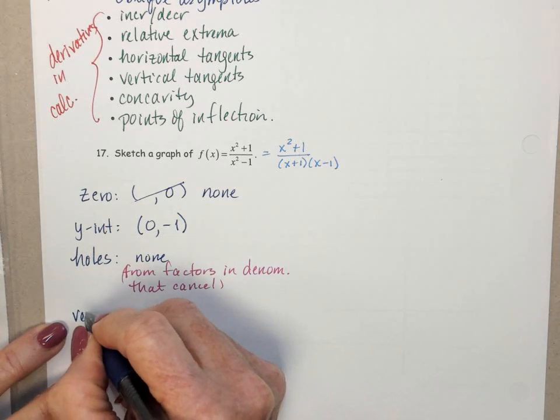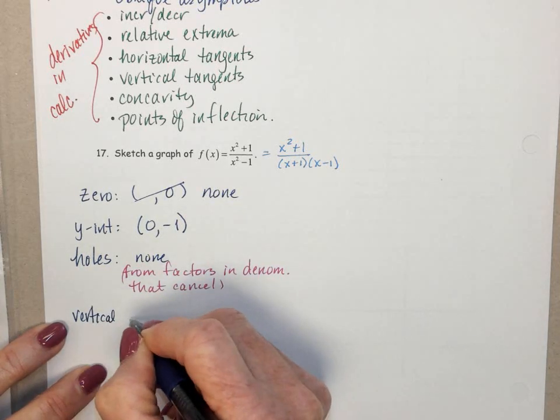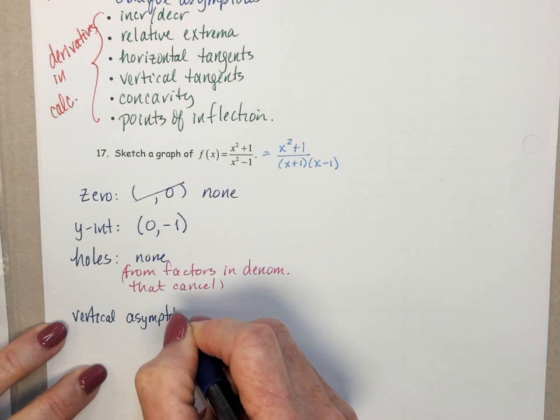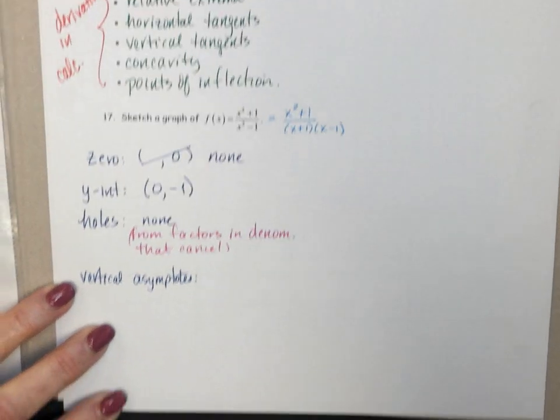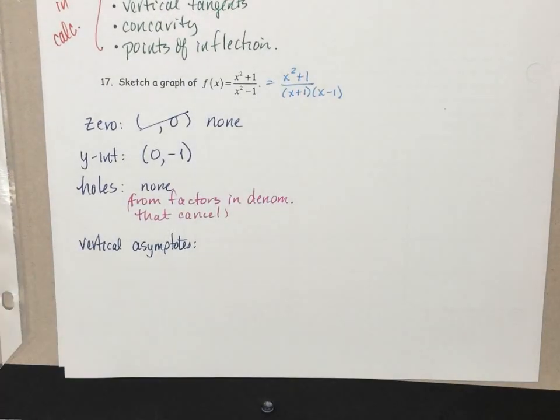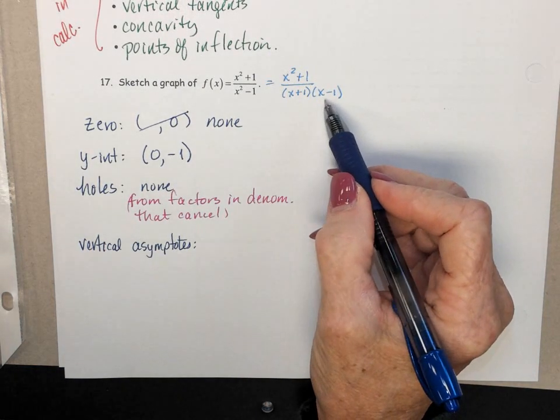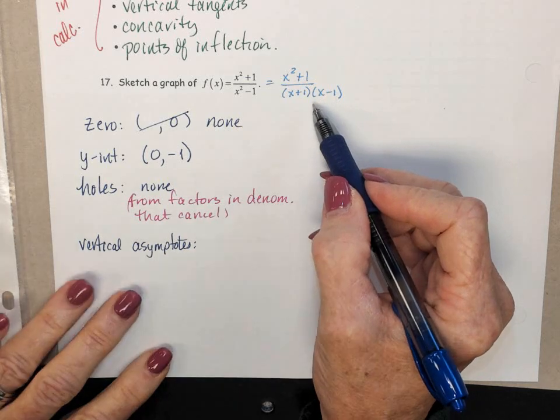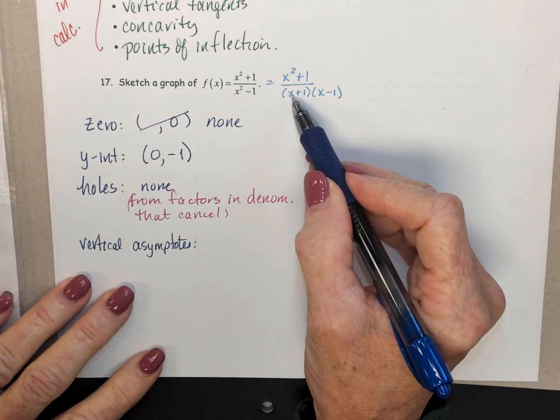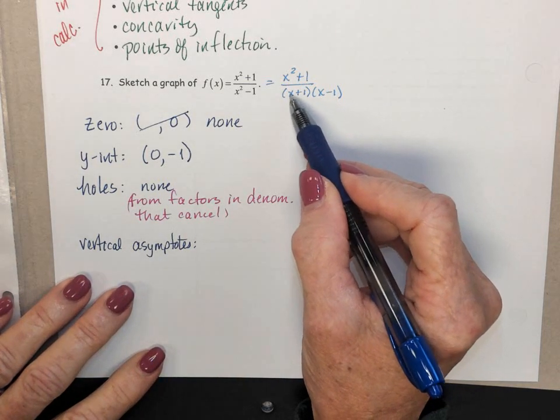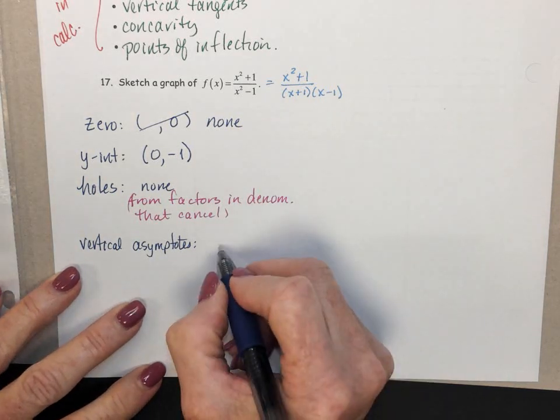Vertical asymptotes. Those come from factors in the denominator that do not cancel. And neither of these factors in the denominator cancel. So we will produce a vertical asymptote for this piece at x equals negative 1, and for this piece at x equals 1.